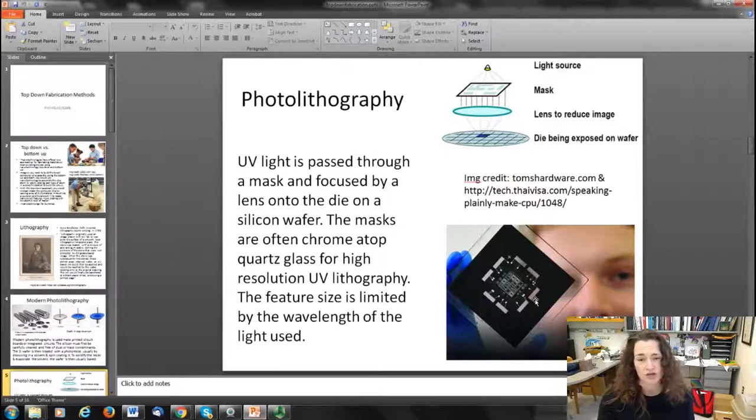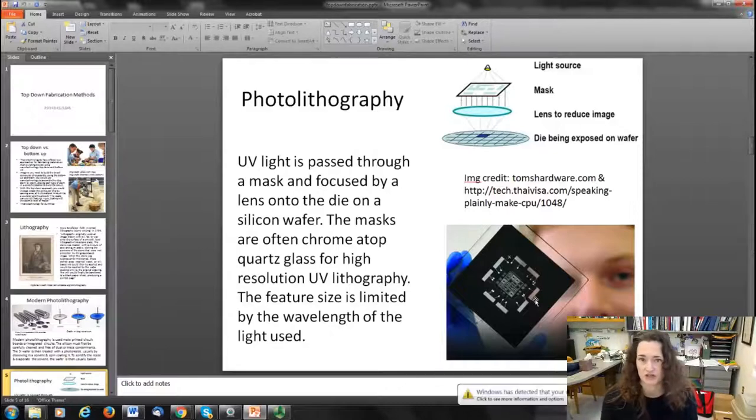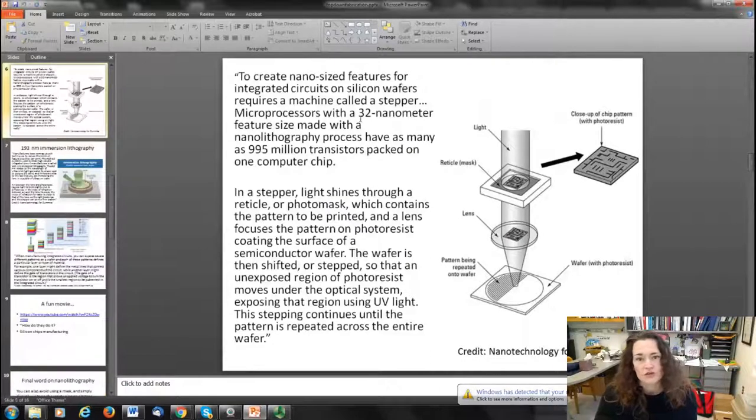For ultraviolet low wavelength printing, it's oftentimes chrome on top of quartz glass for high resolution UV lithography. The feature size of what you want to put onto the silicon wafer is limited by the wavelength of the light used. Tens of nanometers is typical feature sizes for what they can achieve with UV photolithography these days.